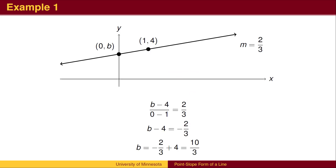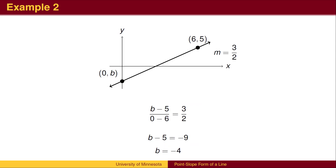Returning to the first example, we could find the intercept directly using the slope formula. Notice that for the final calculation, we are combining the same terms as we did when we simplified the point-slope form to the slope-intercept form. Here is the direct calculation of the y-intercept for the second example.